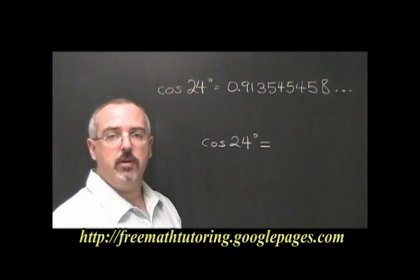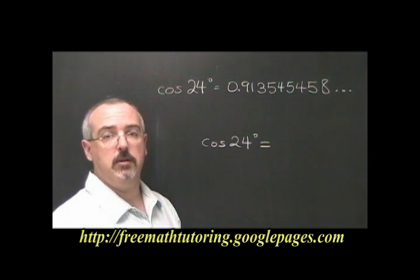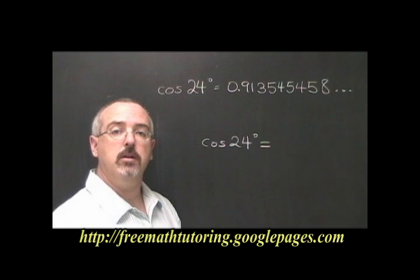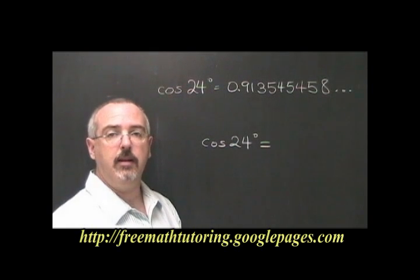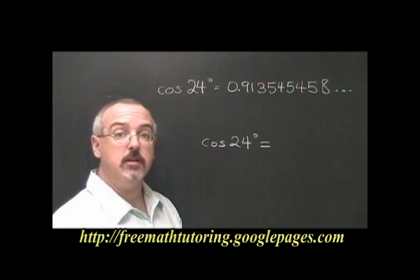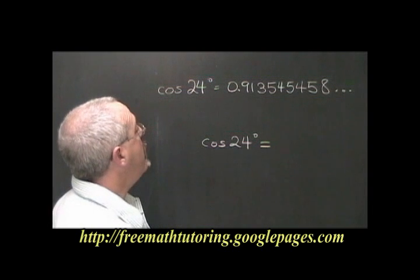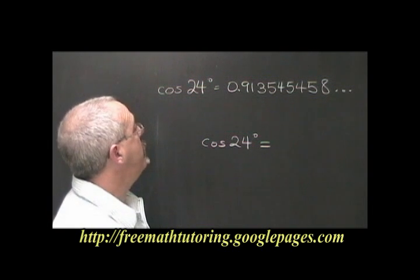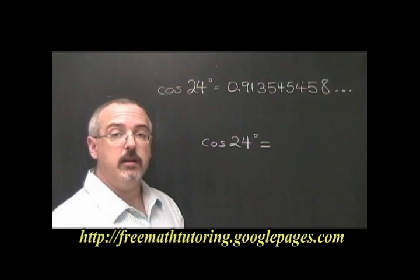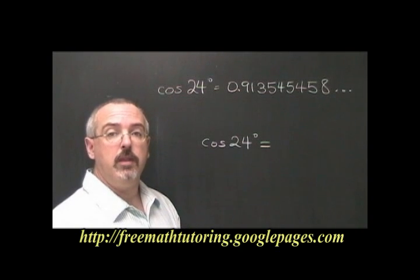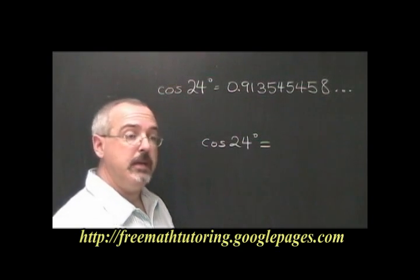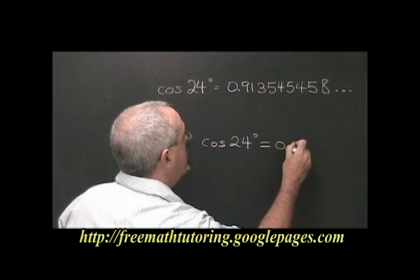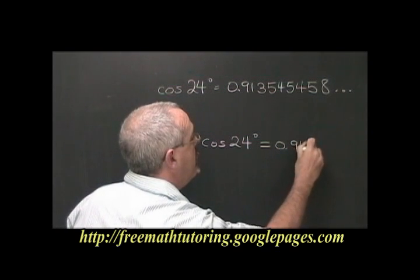Remember that in trigonometry, we round off our answers to four decimal places. If we enter cos of 24 degrees into our calculator, we get a long decimal that starts with 0.91354. Since the fifth number is a 4, and that is less than 5, the fourth number will not change, and our answer will be 0.9135.